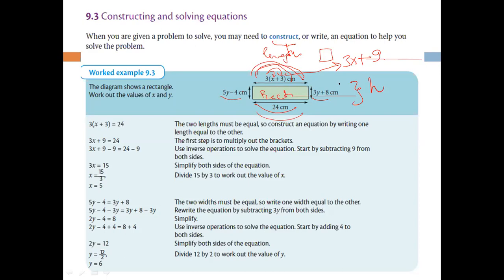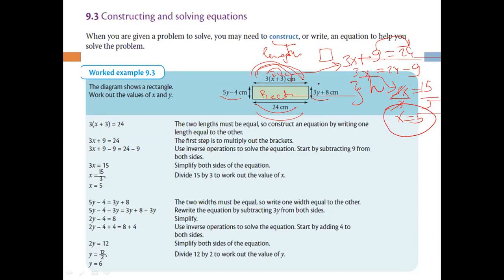This shape is a rectangle, so their values must be equal to each other. We have 9 and 24 as numbers, and 3x as the unknown. So 3x is equal to 24 minus 9. Why minus? Because we had plus and the inverse of plus is minus. 3x equals 24 minus 9, which is 15. We need x, so divide both sides by 3: x equals 5.